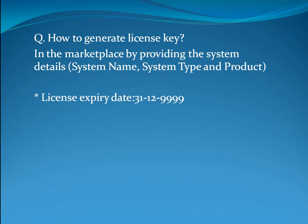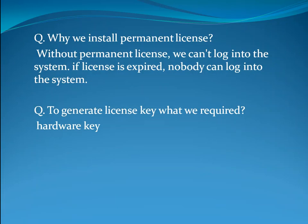How to generate the license key? In the marketplace, by providing the system details — system name, system type, and product. What is the license expiry date? That is 31/12/9999. Why do we install a permanent license? Without a permanent license we can't log into the system if the license is expired — nobody can log in.